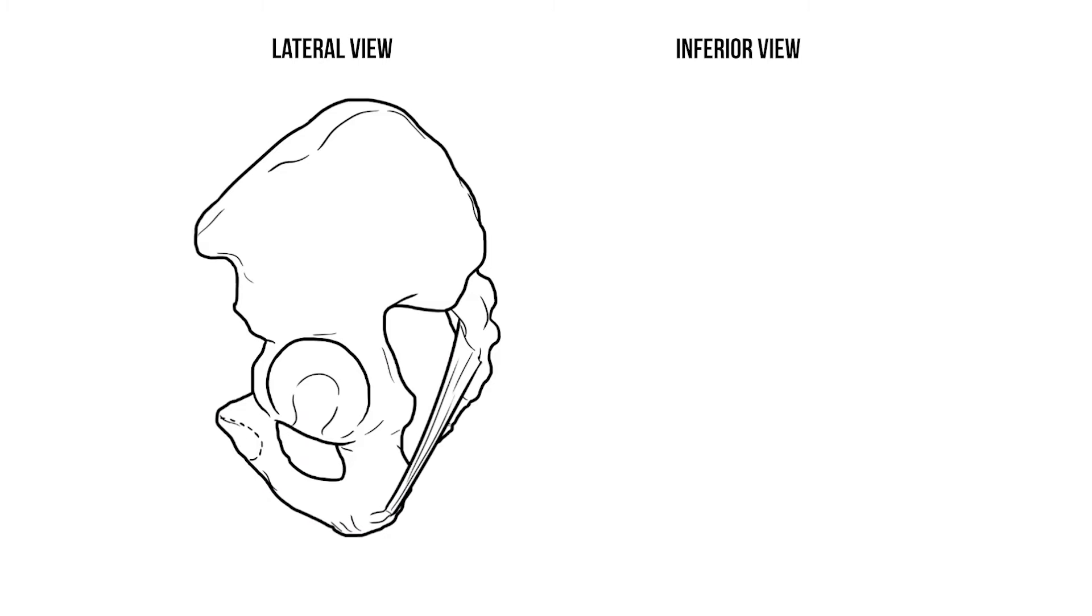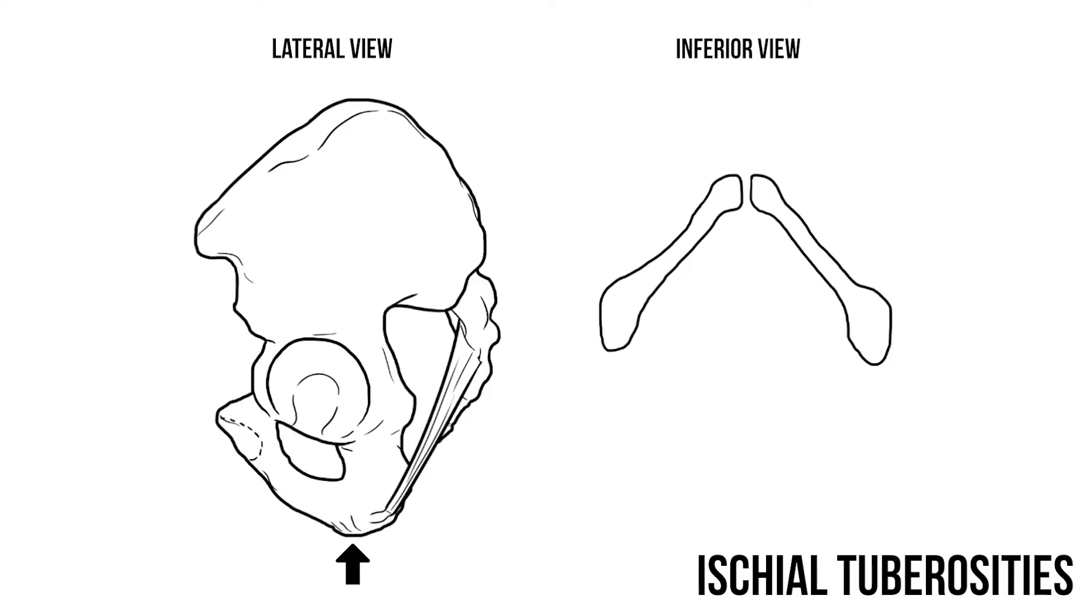Anteriorly we'll have the connection between the two pelvic bones at the pubic symphysis. From here two branches of bone or rami head posteriorly and inferiorly until they reach the ischial tuberosities. These are those roughened bumps at the base of the pelvis that you rest your weight on when you sit down.